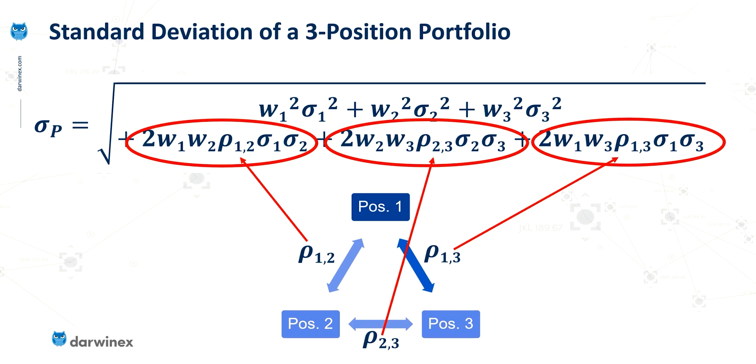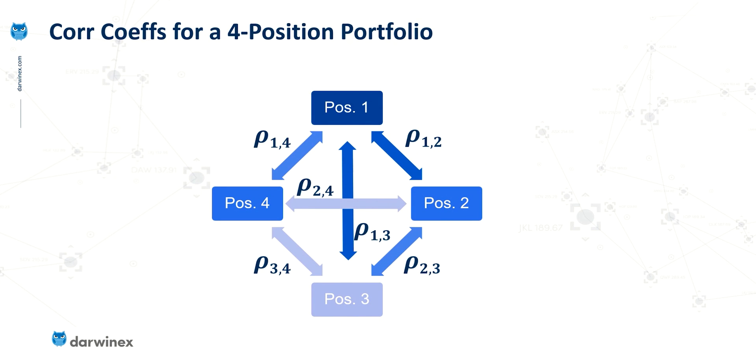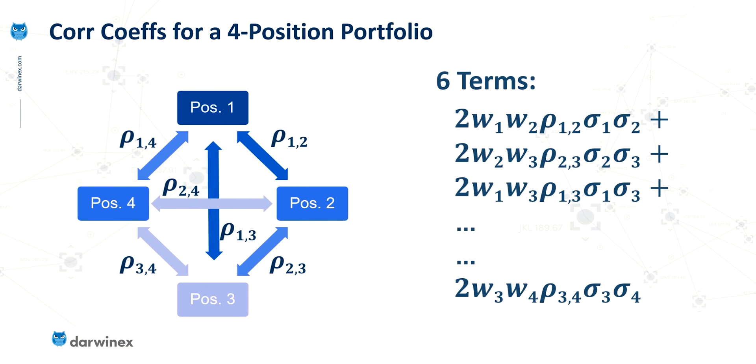So this difference between the number of positions and the number of correlation coefficients between them becomes clearer when we look at an example for four positions. So because we need to measure the correlation between each and every combination of positions, as you can see here for four positions we have six correlation coefficients. And so in the formula that we've just seen in this case we would have six terms as you can see here. Each one representing the relationships between each of the positions we're holding.